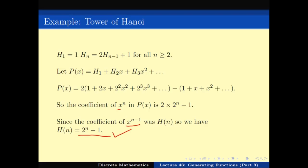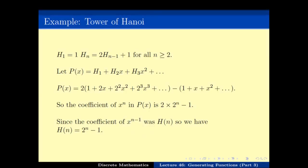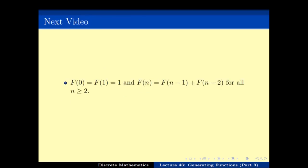We have seen how to use generating functions to solve the Tower of Hanoi: first represent the recurrence as a polynomial P(x), use the recurrence relation to write P(x) as a closed-form function of x, then use tricks like partial fractions and Taylor series expansion to find the coefficient of x^n, giving a compact formula for the recurrence. In the next video we will be doing the Fibonacci numbers, which will possibly be the high point of this course. Thank you.